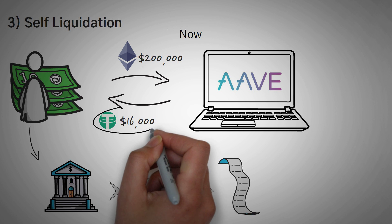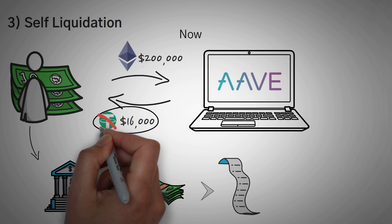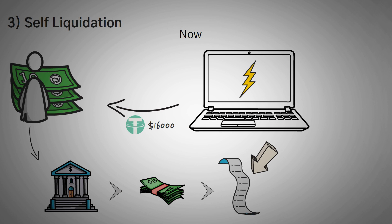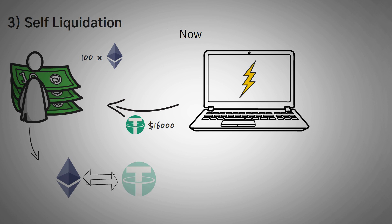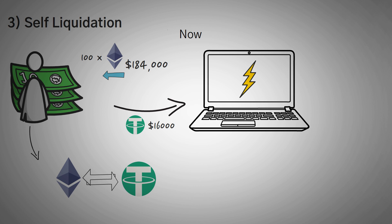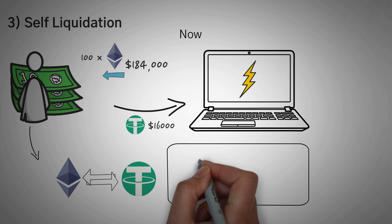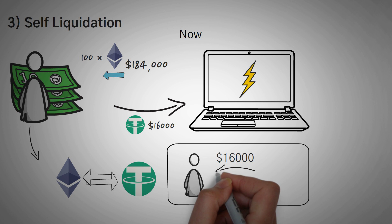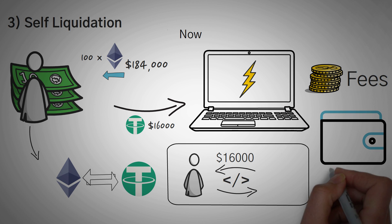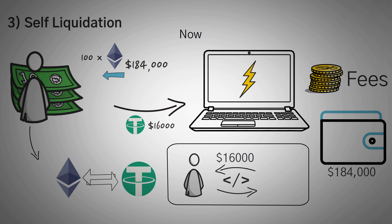You have to pay back the original loan of $16,000, but you don't have any Tether because it's been a year and you paid bills with it. So you take out a flash loan of $16,000 in Tether to repay your loan and get access to your initial 100 Ethereum. Then you immediately take some of that Ethereum, convert it to Tether, and use that Tether to repay the flash loan. Now you have withdrawn around $184,000 worth of Ethereum without putting any of your own money up front. You liquidated yourself, borrowing $16,000 in one transaction and paying it back in that same transaction.